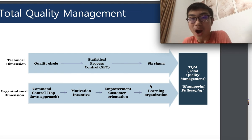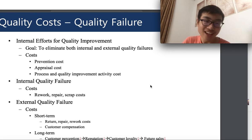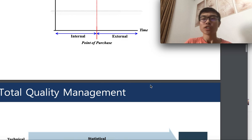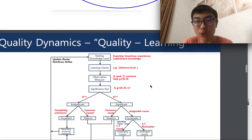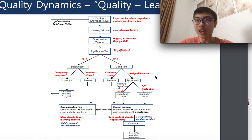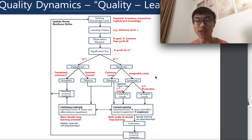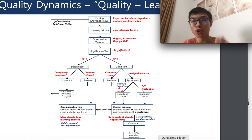That concludes part one of our quality management lecture. We discussed the eight dimensions of quality and internal versus external quality failures. In part two, we will focus on quality management improvement dynamics and quality learning — including a logical process for testing a product and identifying errors in product quality. Stay tuned and see you in part two.